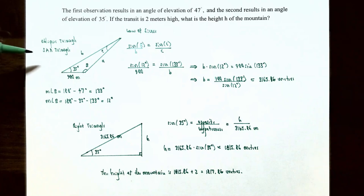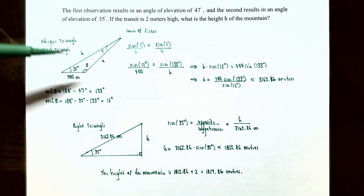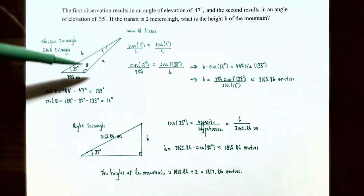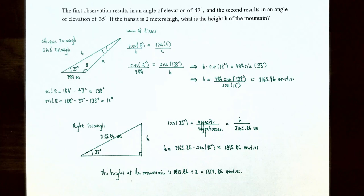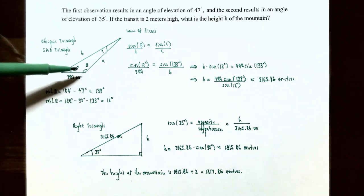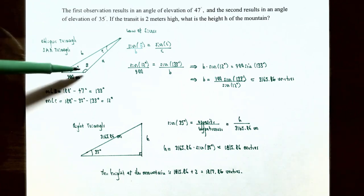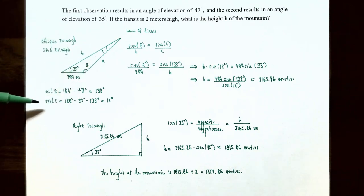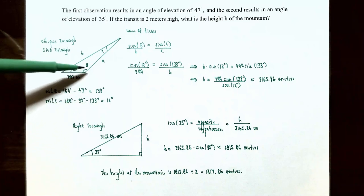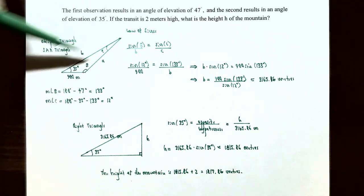The oblique triangle is a side-angle-angle triangle. The 47° angle from the right triangle and angle B are supplementary, so angle B = 180° − 47° = 133°. With angles of 35° and 133° known, angle C = 180° − 35° − 133° = 12°. The side opposite angle C is 900 meters. We'll use the law of sines to find side B.